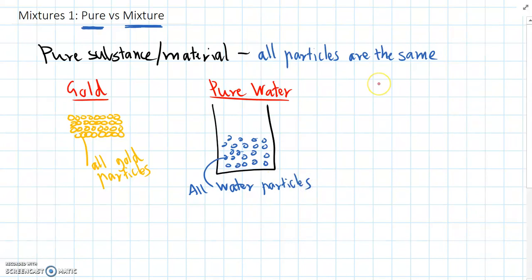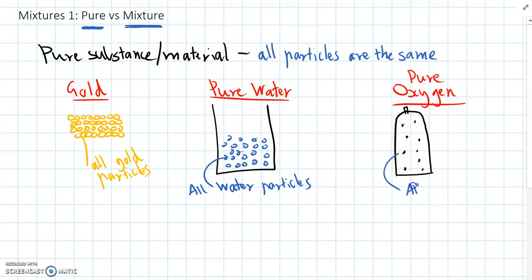We can also have pure substances that are gas, something like pure oxygen. Normally we find this in a gas tank, an oxygen tank, in places like hospitals. If we look at all the particles that make up pure oxygen, they're spread apart really far because oxygen is a gas, but they're all the same—they're all oxygen particles.